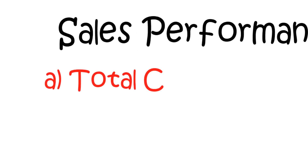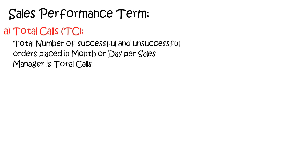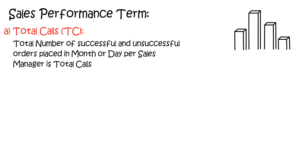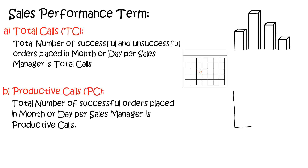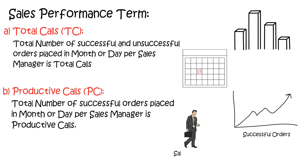Moving on to sales performance terms — it includes four parts. Firstly, total calls: the total number of successful and unsuccessful orders placed in a month or day per sales manager. Secondly, productive calls: the total number of successful orders placed in a month or day per sales manager.